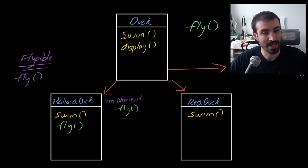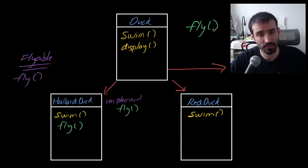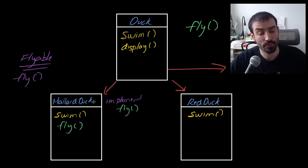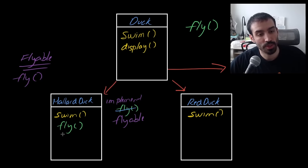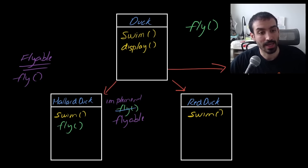Ideally, we only want to implement the fly function once and have it shared between all the classes. This is where the strategy pattern can make things easier. To recap: we have a duck superclass and we want to implement fly for some subclasses. A natural approach is a flyable interface with a fly function, and classes that want to fly just implement it. But the problem is any other class wanting the same fly behavior needs to redefine the function — not a very reusable approach.